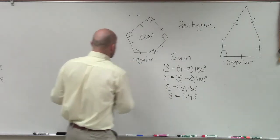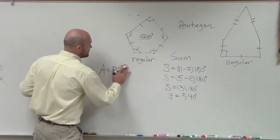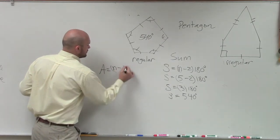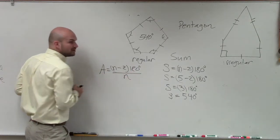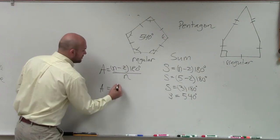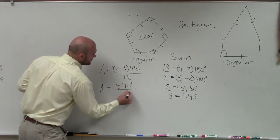So if I want to find out what is just the measure of one angle, what I do is I use this formula, n minus 2 times 180 degrees divided by the number of sides. Well, we already know what the sum is. That's 540 degrees divided by 5, right?